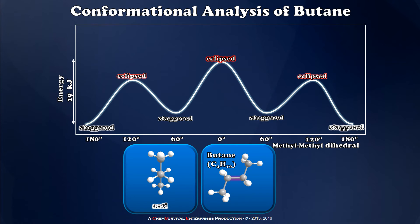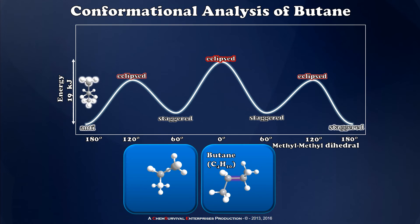The anti conformer is of course the lowest energy conformation possible, because there's as much space as possible between the largest groups. A 60 degree rotation of the carbon-carbon bond leads me to my first eclipsed conformation. Although this is higher in energy than the anti conformation, it's not yet the highest energy conformer, because my methyl groups are each eclipsing a hydrogen.